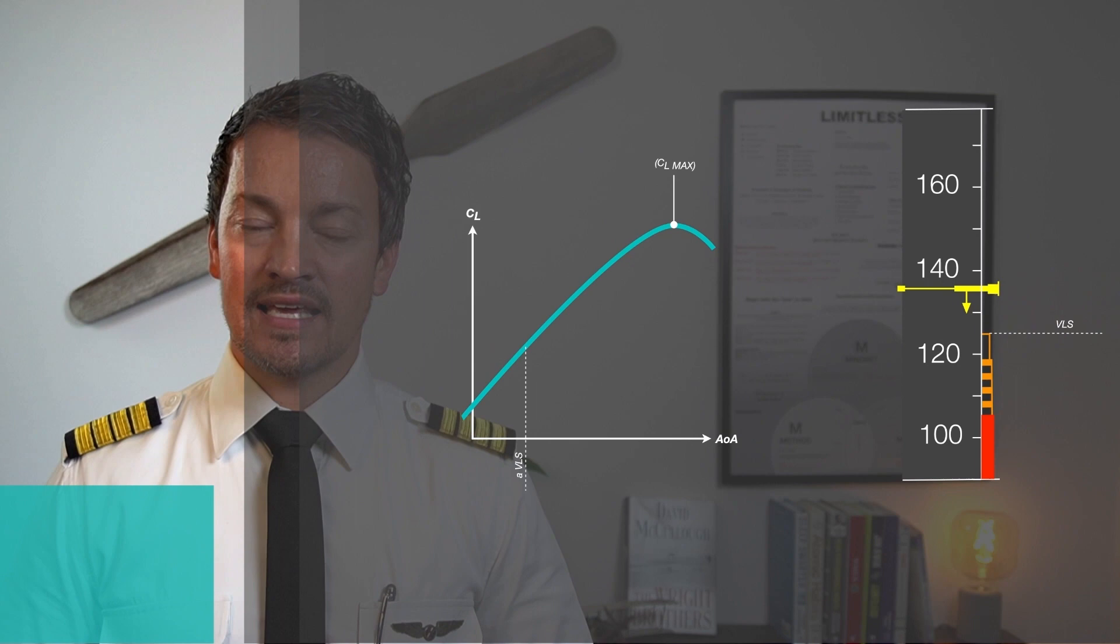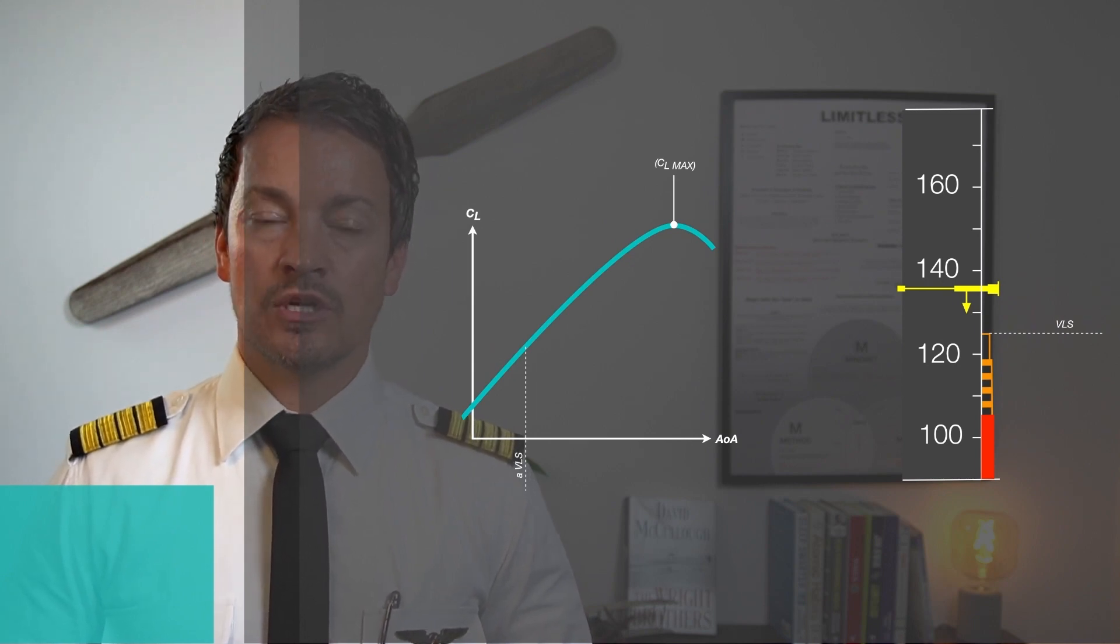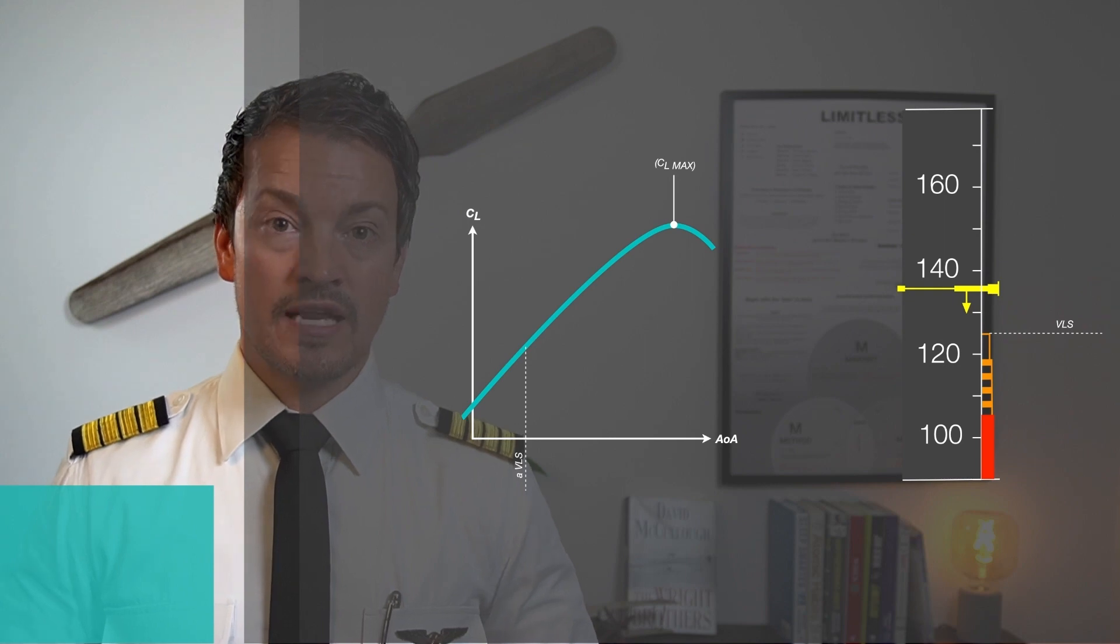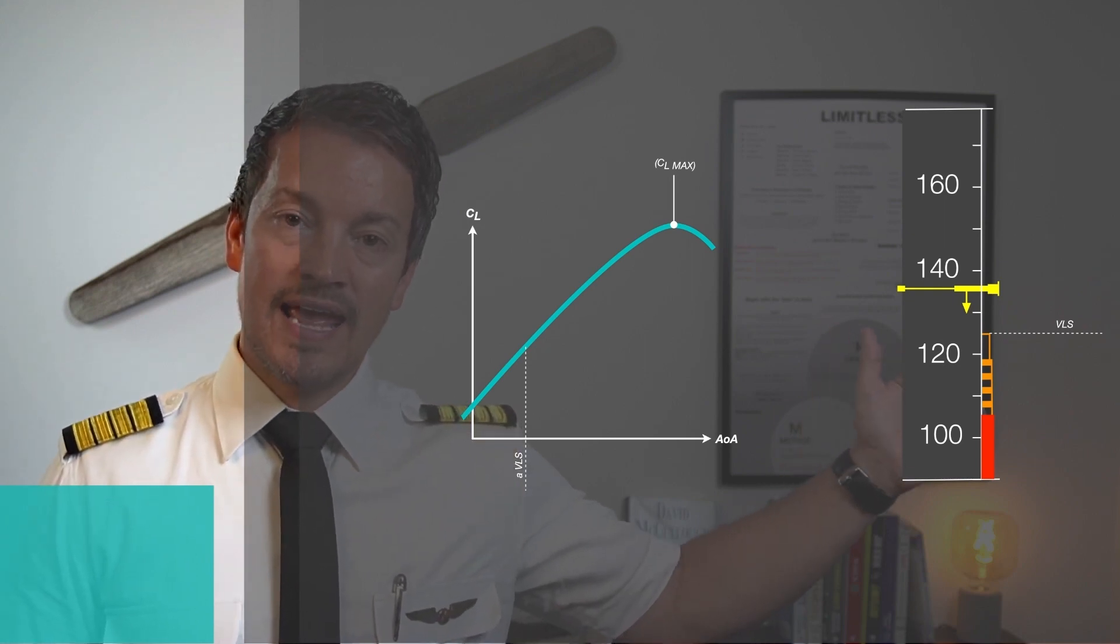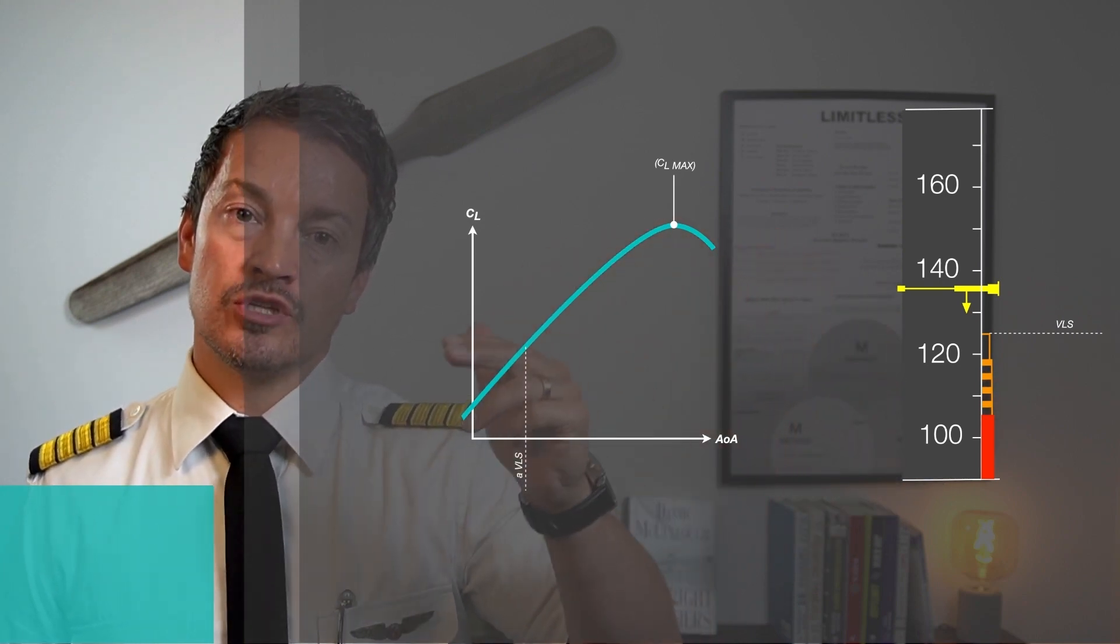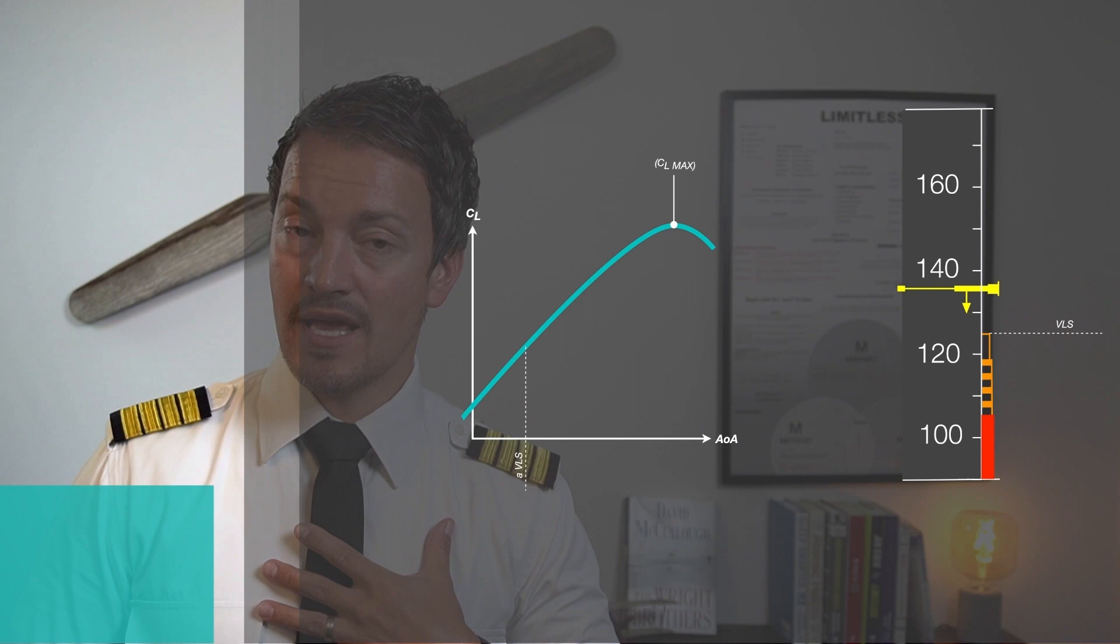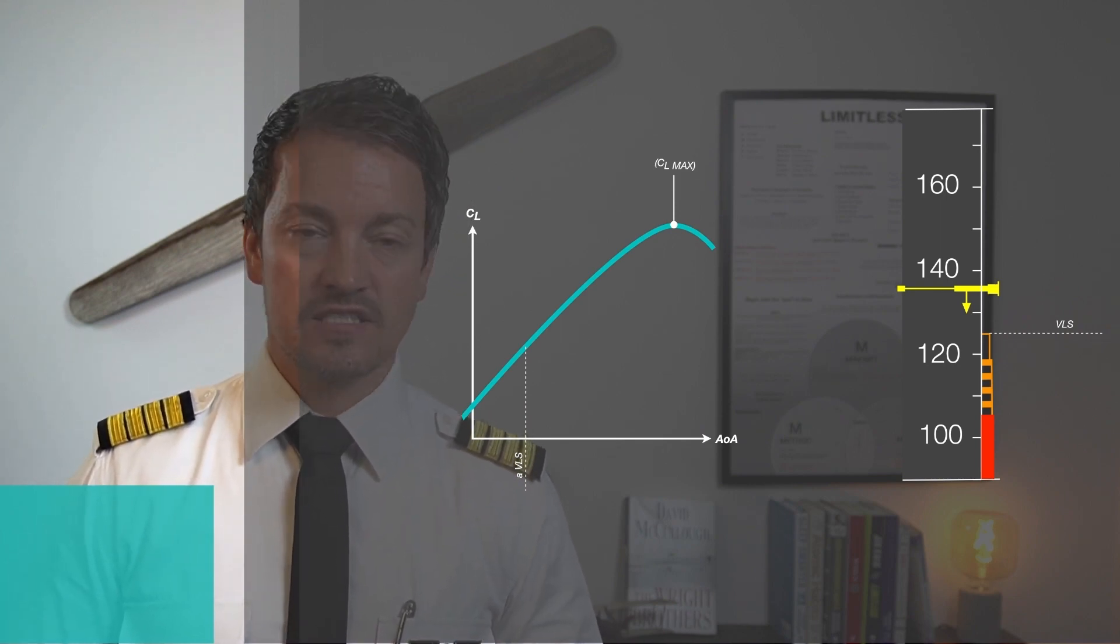This is where the angle of attack is at its critical value and where the airflow on the upper portion of the wing starts to separate, creating a stall. The stall speed is continuously calculated by the FAC and will be illustrated, so the margin down to the operational speeds and to the protection is also calculated, and they are fixed values.